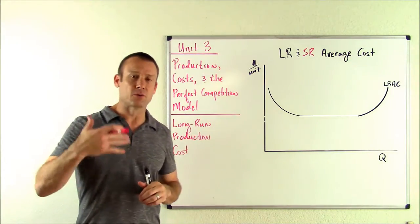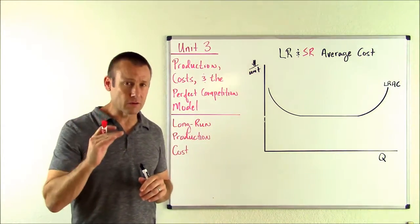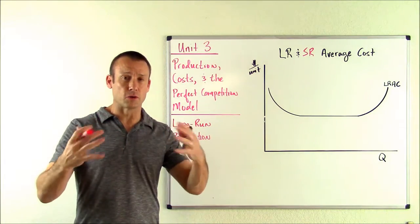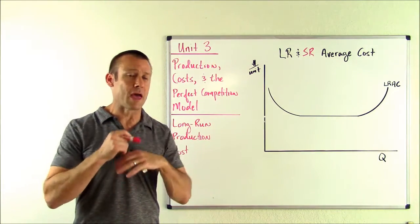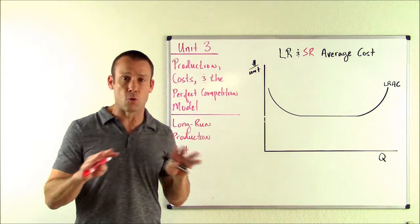Now, first thing I need to do is define the long run. In microeconomics, the long run is defined as when all of your inputs to production are variable. Everything is variable. There is no fixed cost.